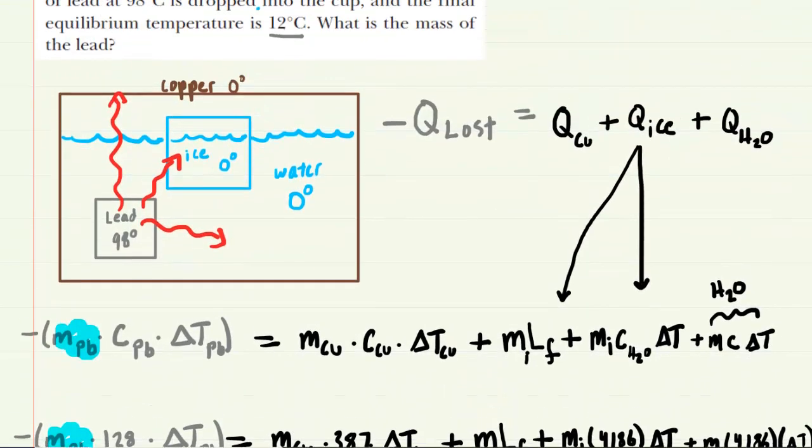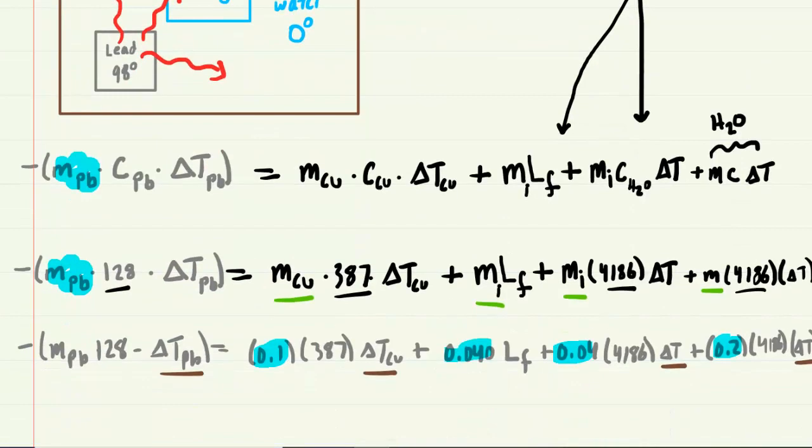We're going to need to pick up the temperature changes for each object. So all of these delta Ts. For lead, remember the lead started out at 98 degrees. And it's going to cool down to 12 degrees. So for the temperature change, you would simply subtract 98 by 12. And you would get, of course, 86. So the temperature change for lead will be 86. For copper, it began at 0 degrees and warmed up to 12. So that temperature change would be 12. Same thing with the ice cube. It began at 0 and warmed up to 12 degrees. And same thing with the liquid water. So we'll fill in all those temperature changes.